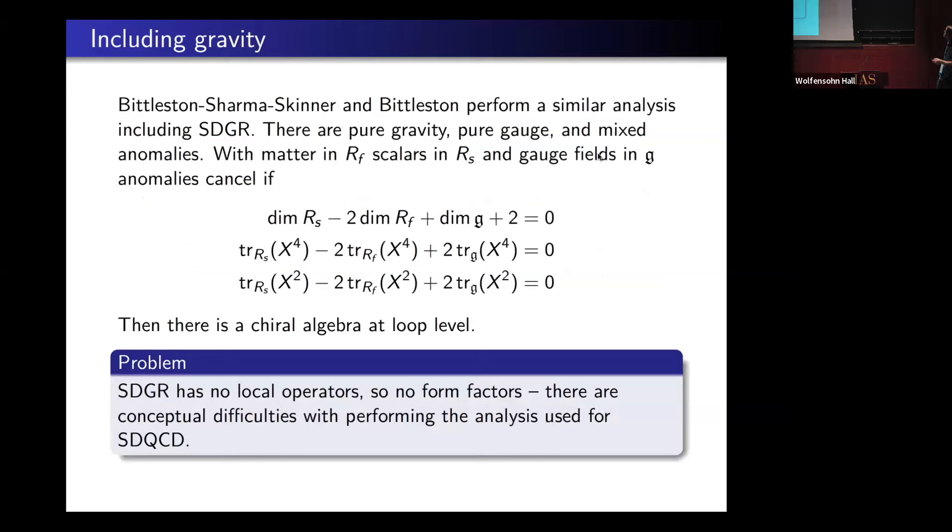Let me also quickly mention there's some lovely work of Bittleston, Sharma, and Skinner, where they see what happens with gravity. There one has slightly different anomaly cancellation conditions, which are listed here: pure gauge, pure gravity, and mixed anomaly, so there's three conditions. When these anomalies cancel, there is a chiral algebra incorporating loop-level corrections. The problem is we can't run this program because there's no local operators in the theory.